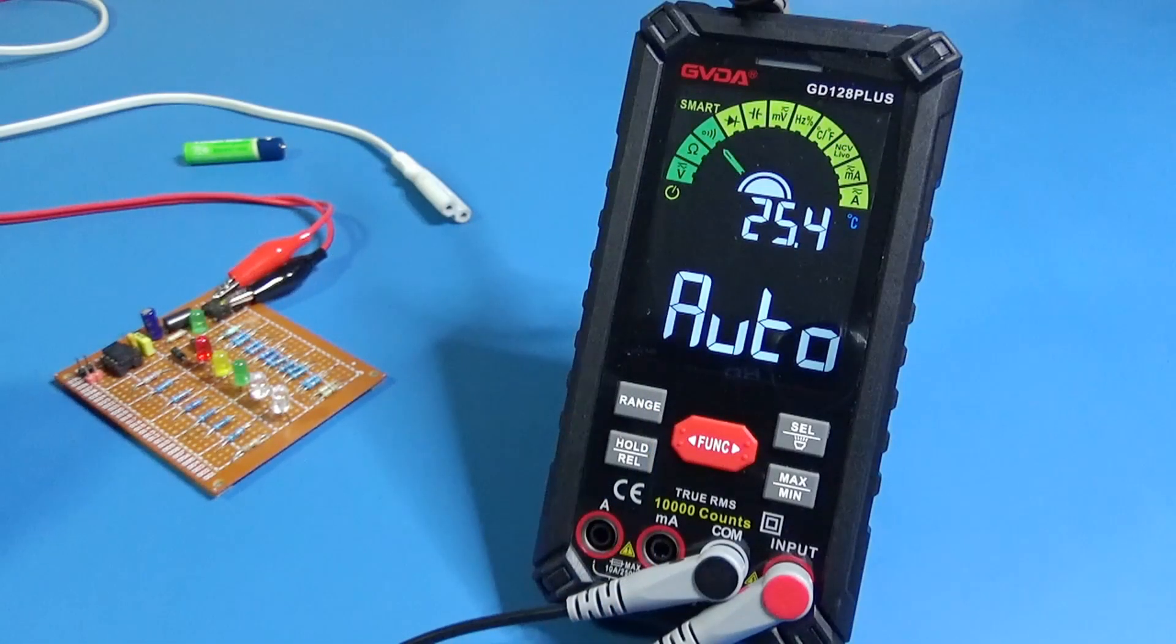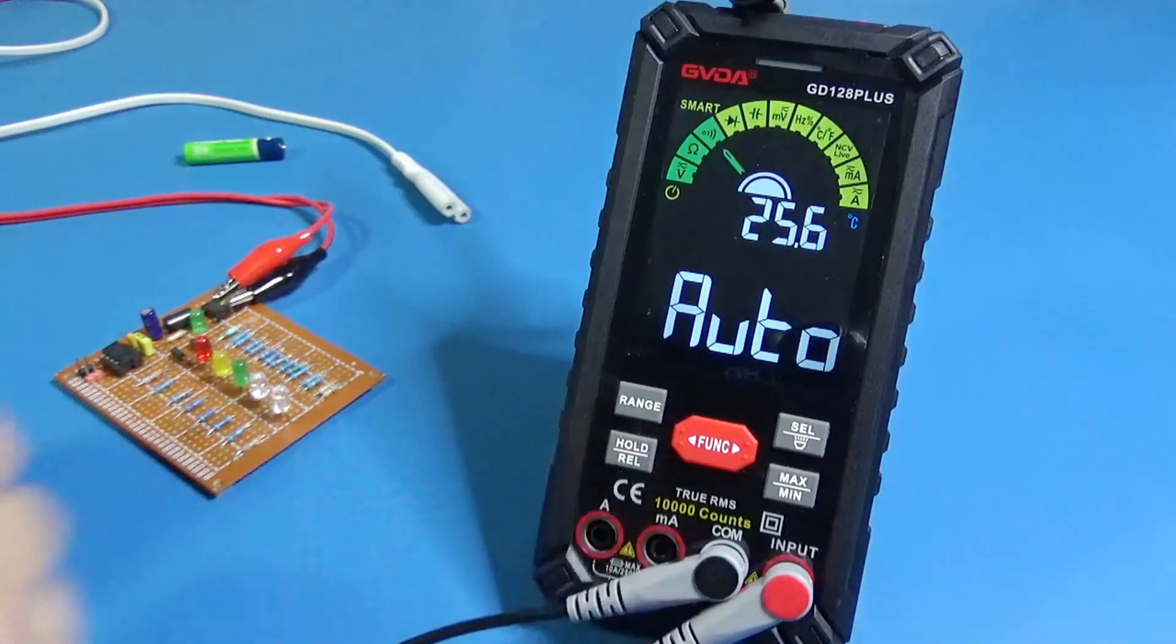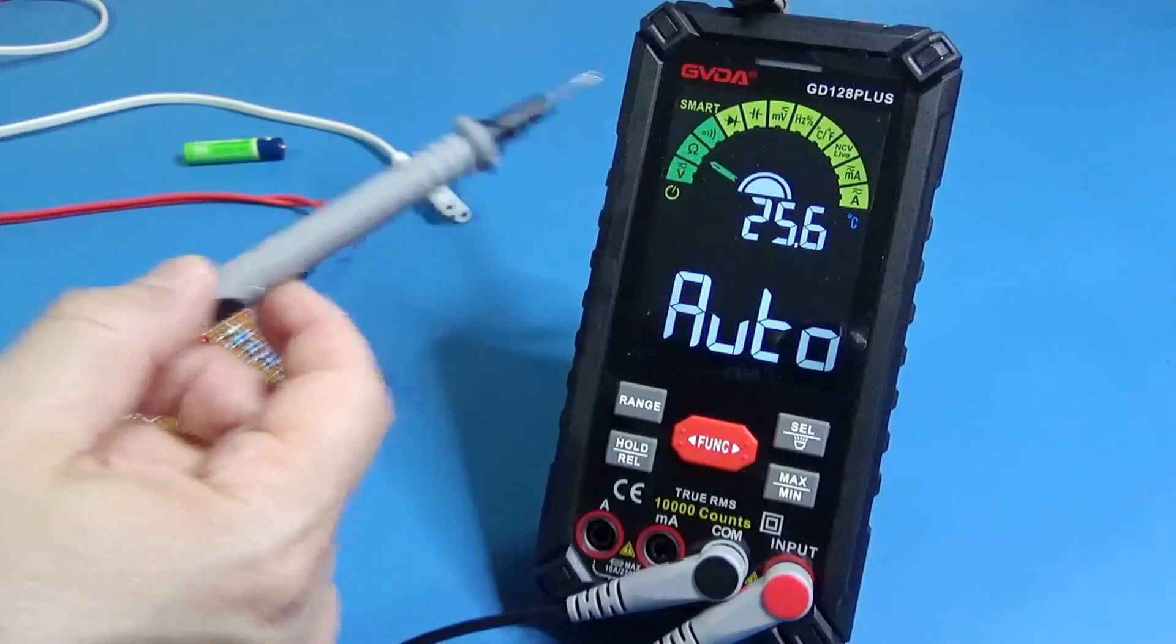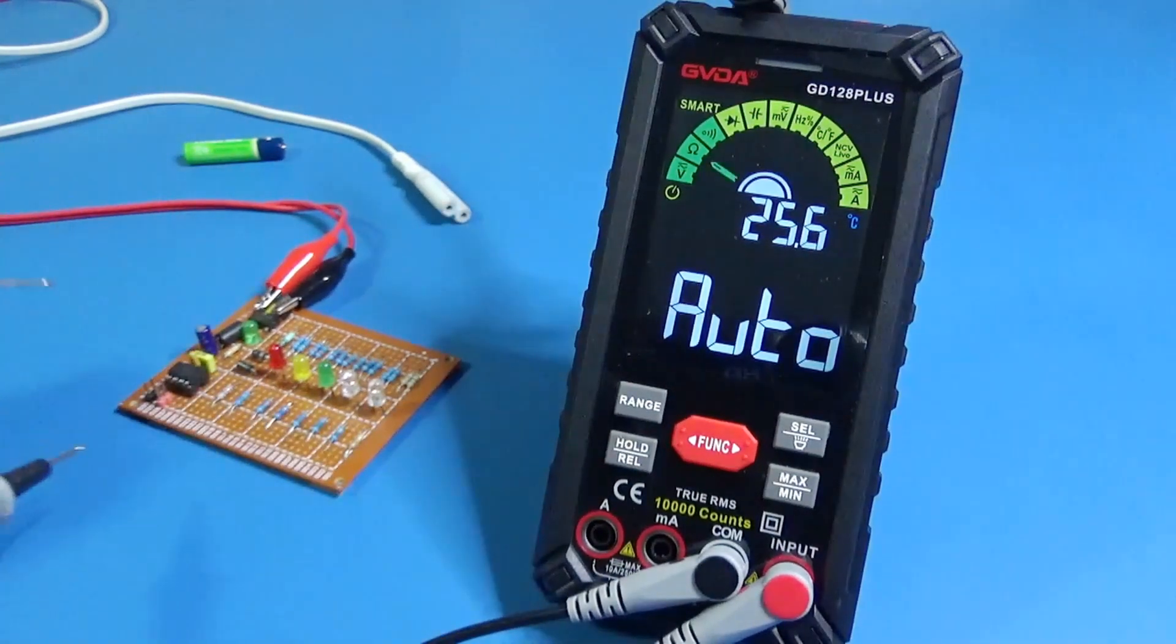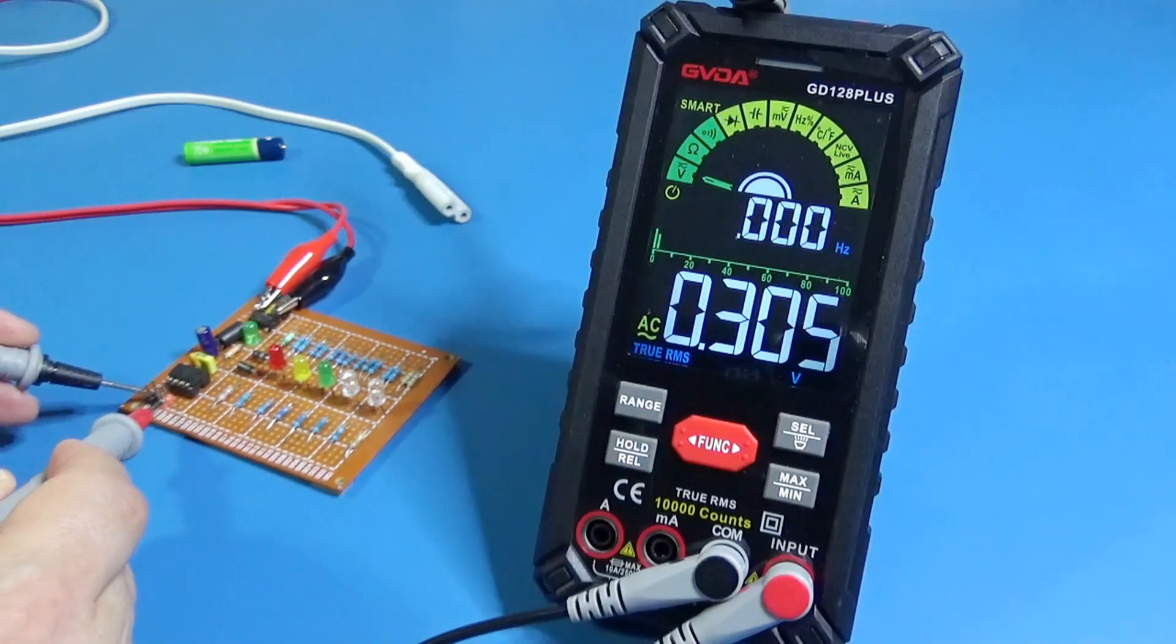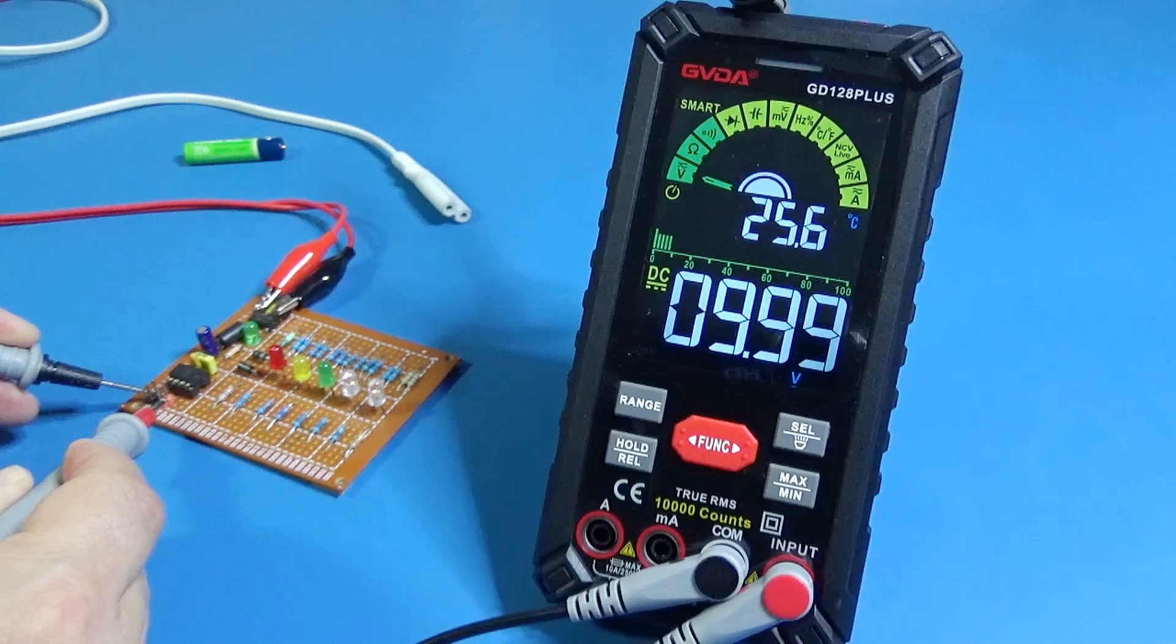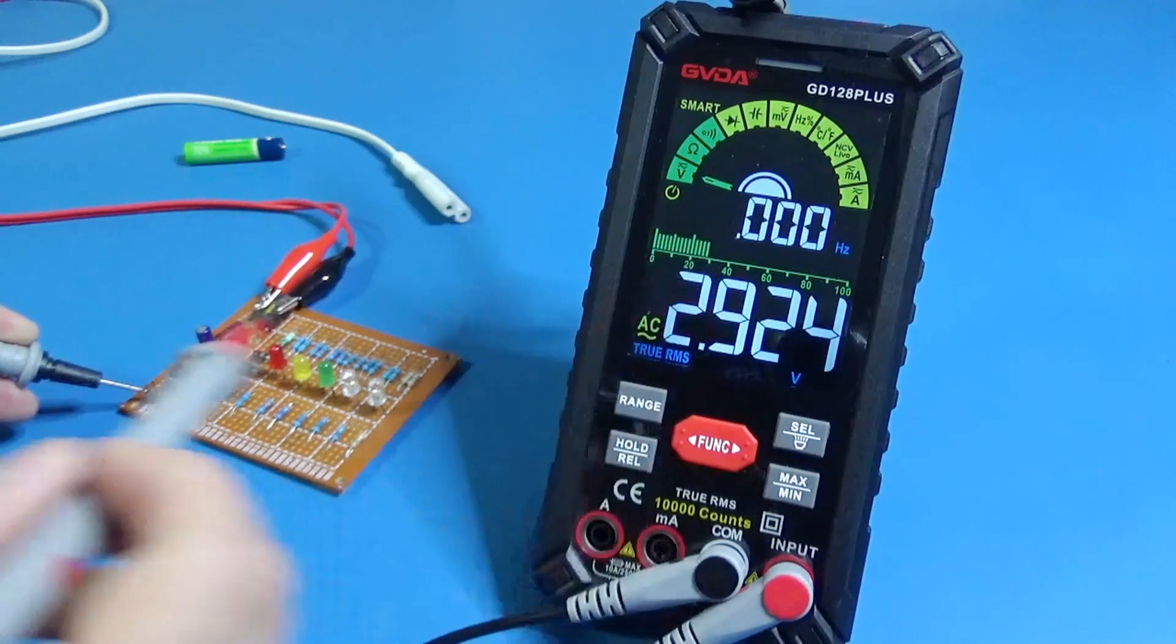Now let's try the smart function. Without touching anything here I will let the microcontroller check what I'm doing. I will start with the 10 volt reference. And it says 9.99 volts DC. I like also the bar on it.